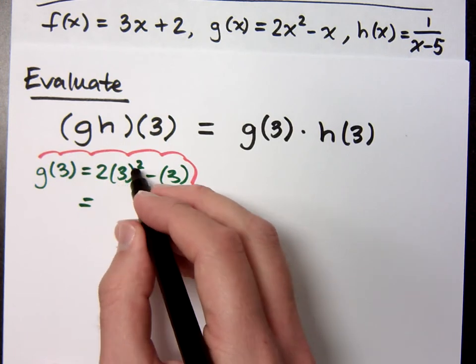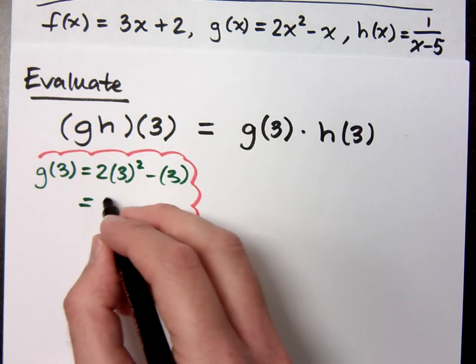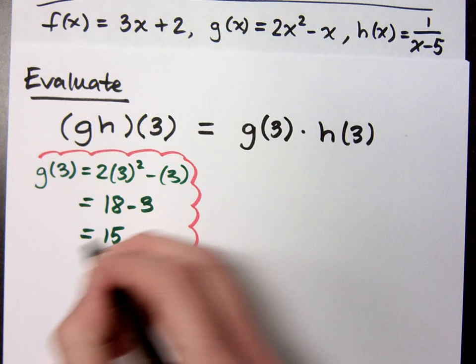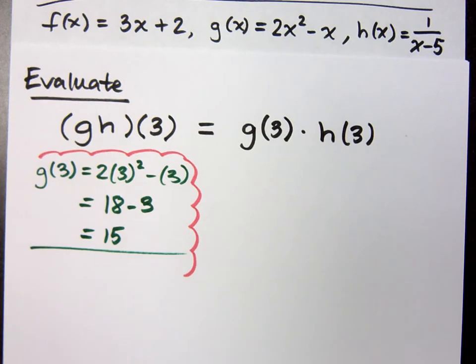3 squared is 9, times 2 is 18, minus 3, and I end up with 15. Do you all agree with that part? Just plug in functions. All I have to do is plug in numbers.